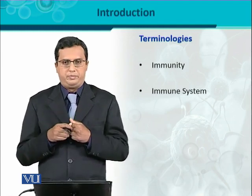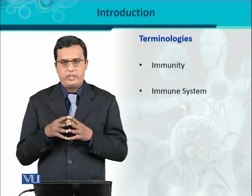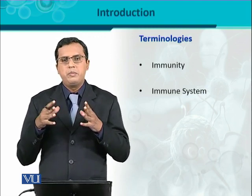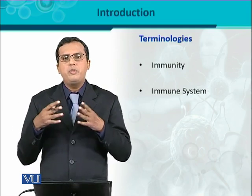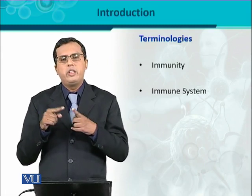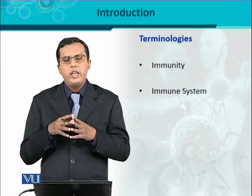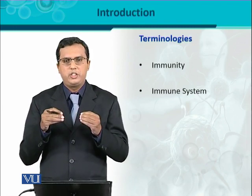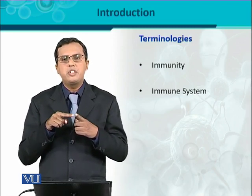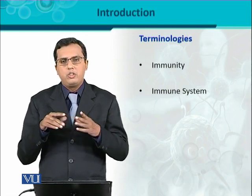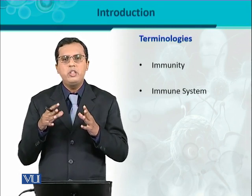Next is immune system. Immune system is basically the collection of all the components. Jaysay aap ko pata hai ke system is the other name of different components. In our body there are so many systems and those systems are comprised of organs, tissues, cells, and molecules. Similarly, in the immune system it is basically the collection of all kinds of immune tissues, immune cells, and secretory or immune molecules. Yeh sab cheezay mil kar ek system banati hai, ek nizam banati hai, jisay hum immune system ka naam deyenge.